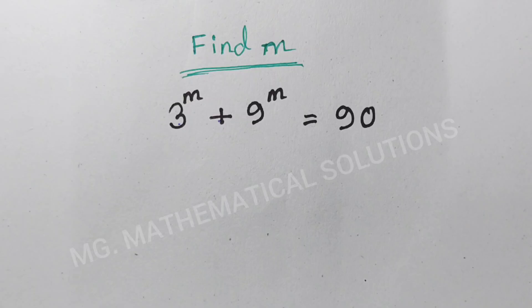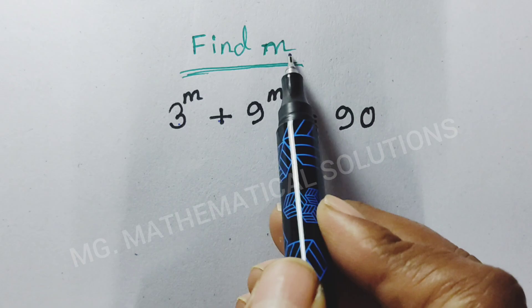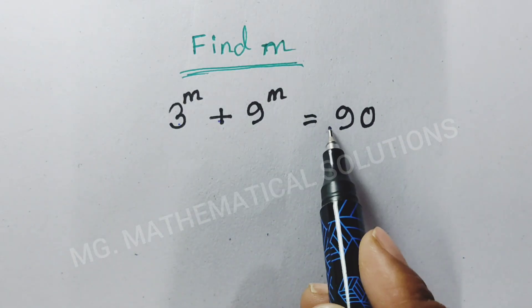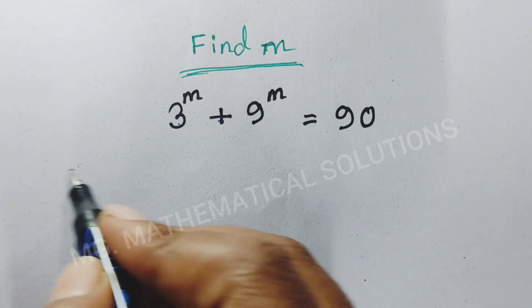Hi students, today I solve an easy math olympiad problem which is find m of the equation 3 to the power m plus 9 to the power m equal to 90. Let's see the solution.